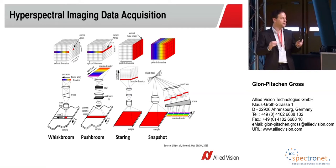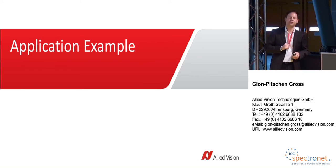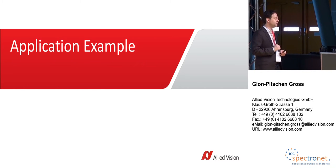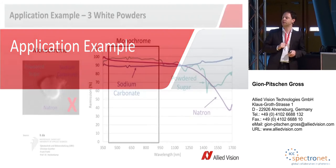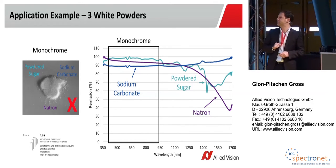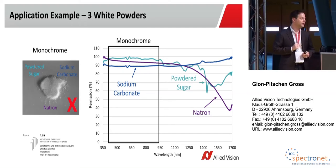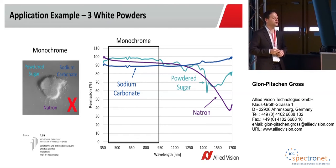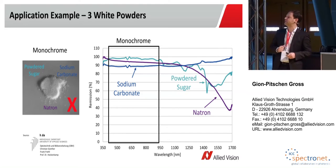After this rather theoretical introduction, let's look at an application example. In the image I have three different white powders, and from just looking at them it is not possible to distinguish any. For each material, we recorded the spectral data covering the visible range from roughly 350 nanometers up into the shortwave infrared region. The first powder is sodium carbonate, also known as washing soda, used in many washing detergents as a water softener or stain remover. Its spectral curve is pretty much flat over a wide range of the spectrum.